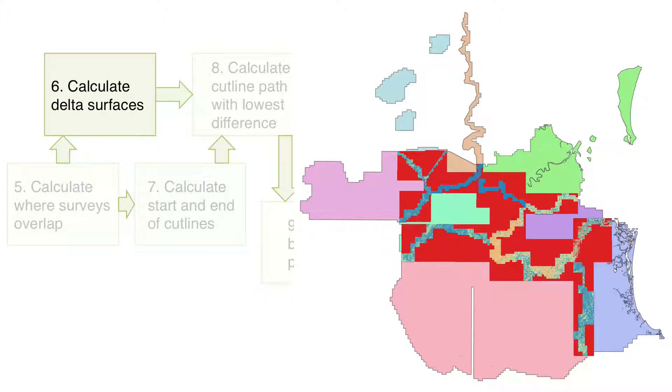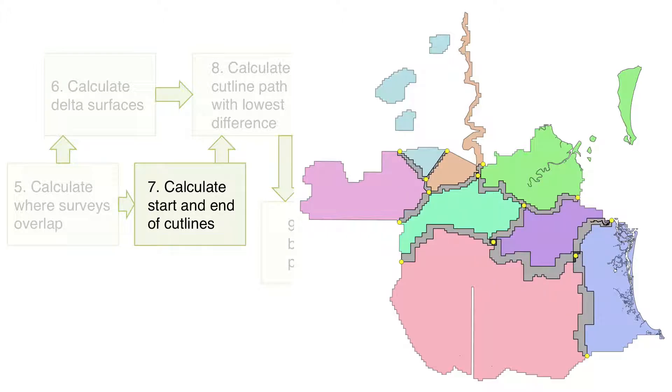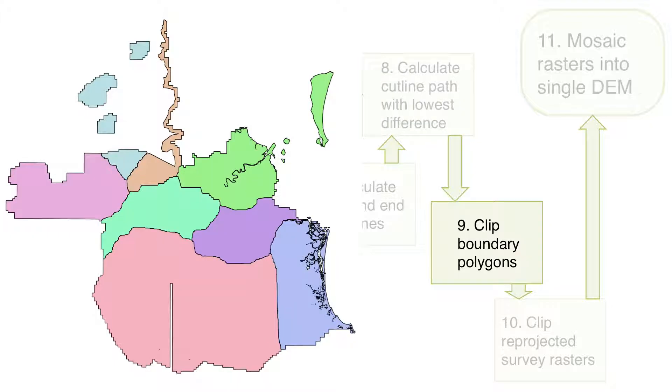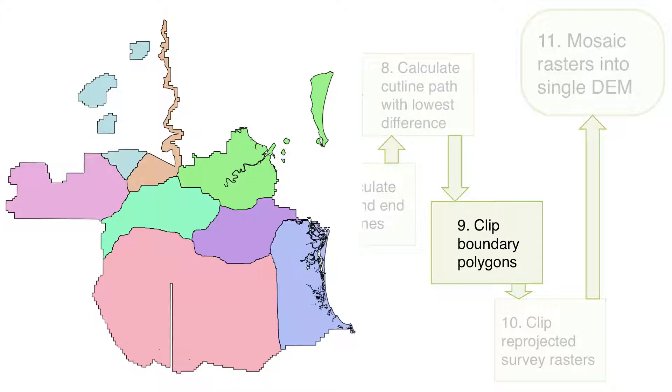By automating the process, whenever new data is added, a new DEM can be generated automatically. And by capturing the knowledge about the process in the form of a workflow, we've transformed it into executable documentation.